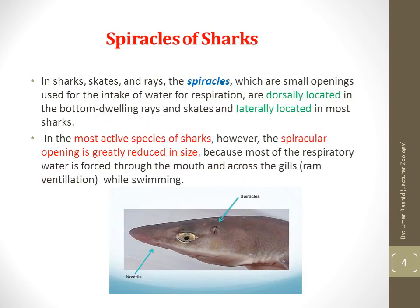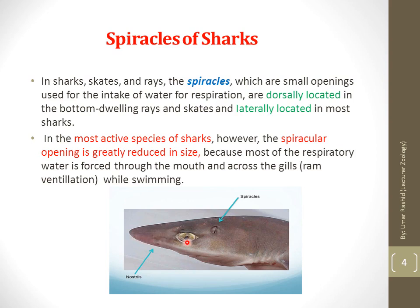Spiracles are the openings which are present just behind the eyes of all rays and some sharks. They are modified gill slits that allow fish to take in oxygenated water. As shown in the diagram, the spiracle is located just behind the eye of the fish. Spiracles help a shark to breathe when it is lying on the sea bottom or even buried right under the sand.